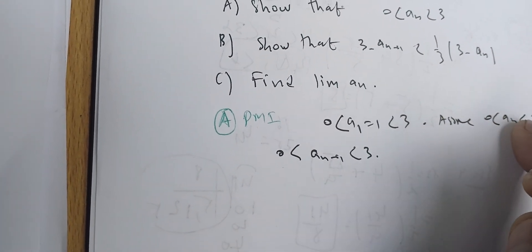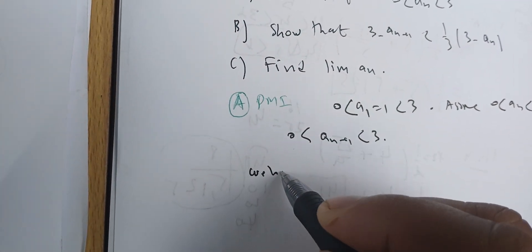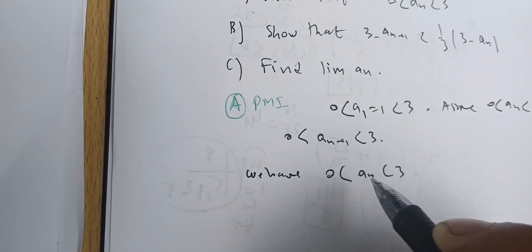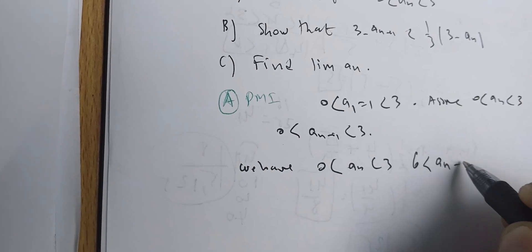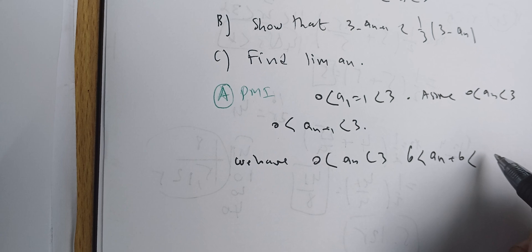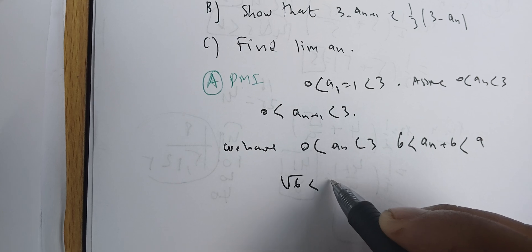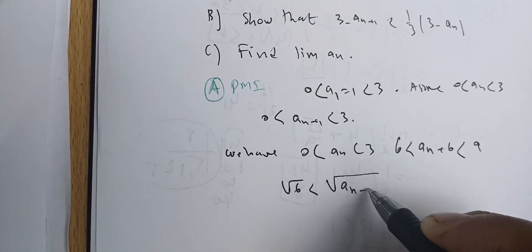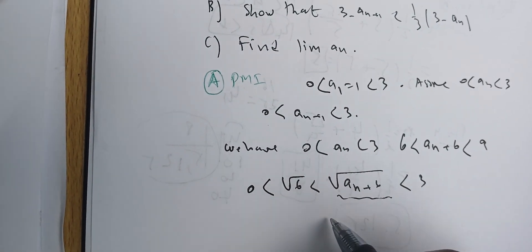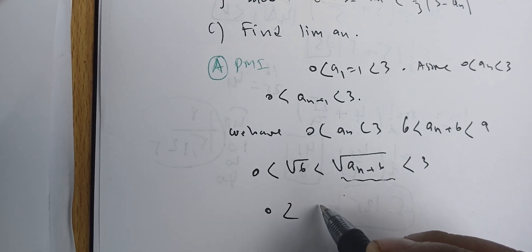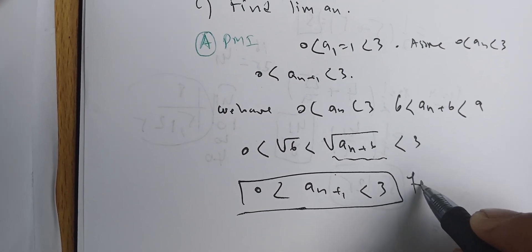Starting from the assumption 0 < aₙ < 3, we add 6 to all sides to get 6 < aₙ + 6 < 9. Taking the square root throughout gives √6 < √(aₙ + 6) < 3. Since √6 > 0, this means 0 < aₙ₊₁ < 3, completing the inductive step.